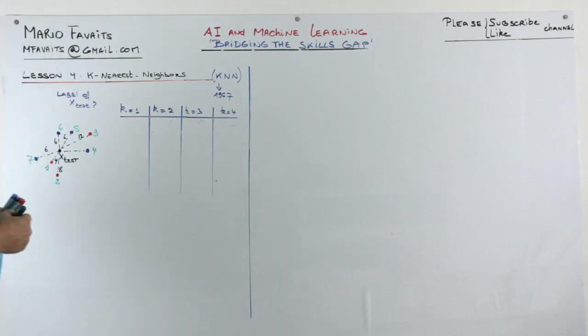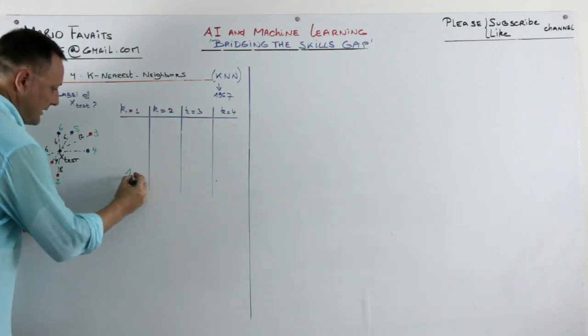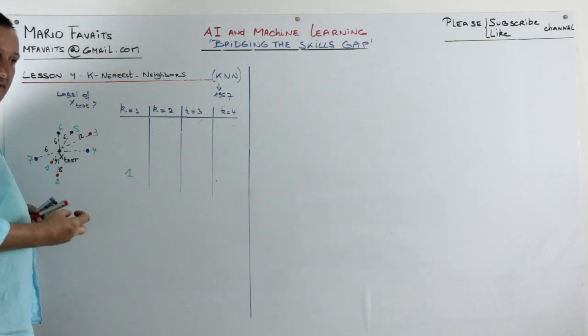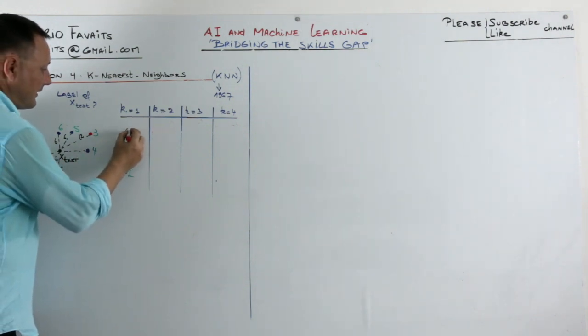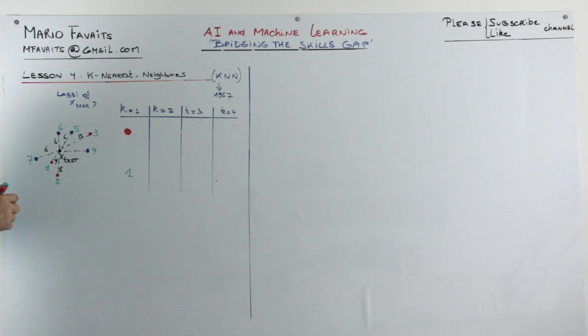So if we try case one, it's clear that point number one is a red point. If we are agreeing with the fact that similar points have similar labels, we would classify the test point as red. It's quite obvious.